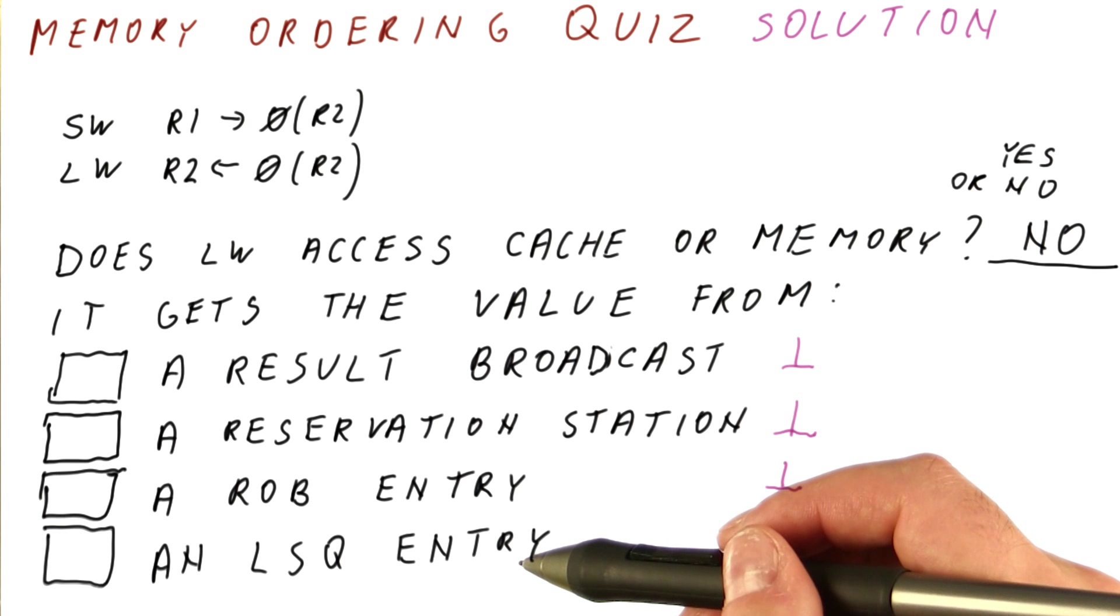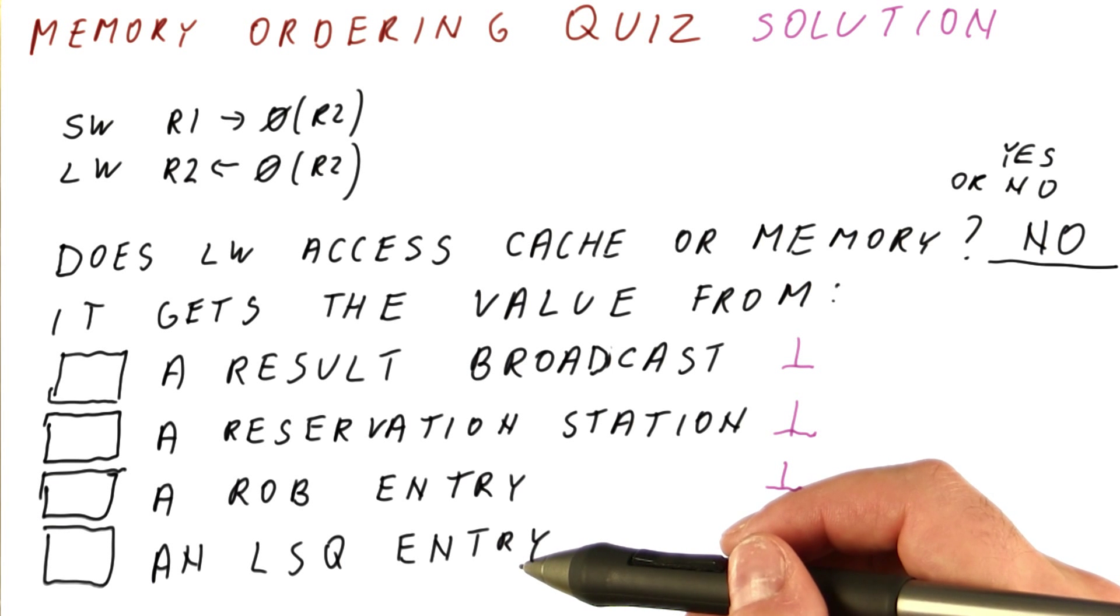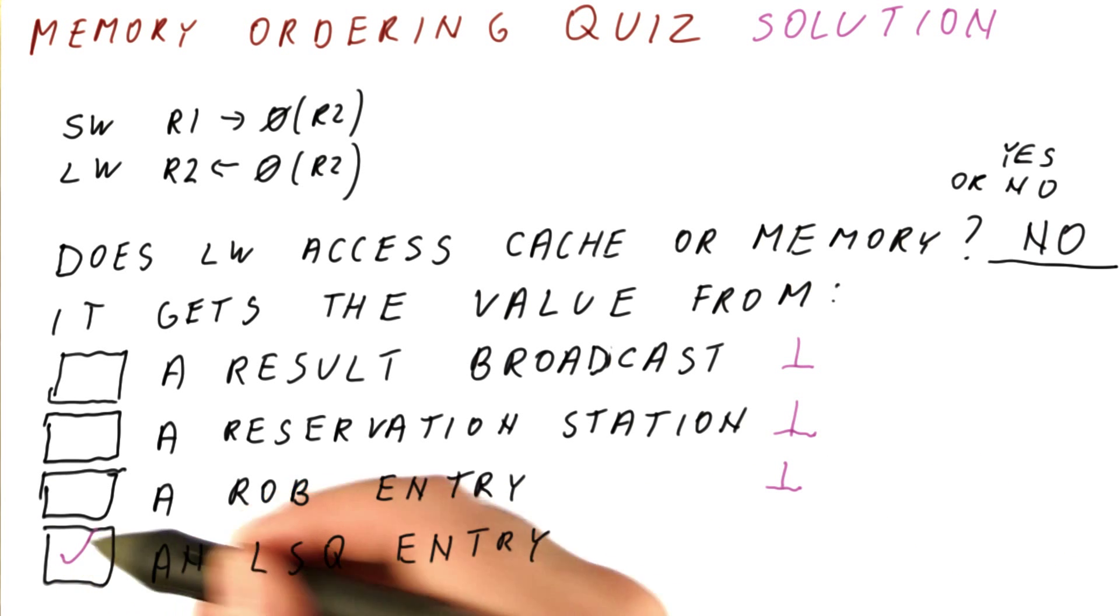The store does keep the value it's going to store in the load store queue. If you remember, that's where the load searches for a value when it's trying to match its address to addresses of previous stores. So this is the only correct answer.